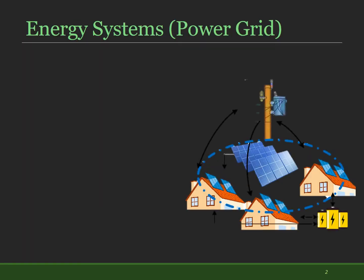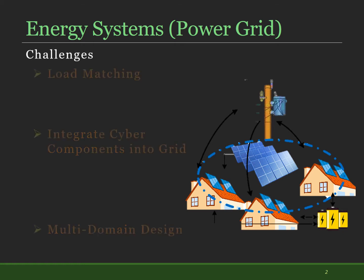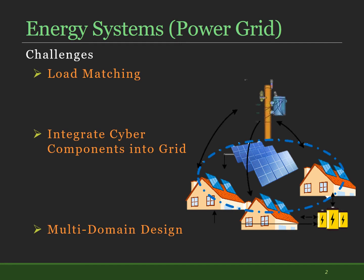Energy systems, or the power grid, are composed of power electronic devices. These devices have the capability of consuming, generating, distributing, and storing energy. The main objective of utilities is to provide consumers' electricity demand while maintaining the grid efficiency.